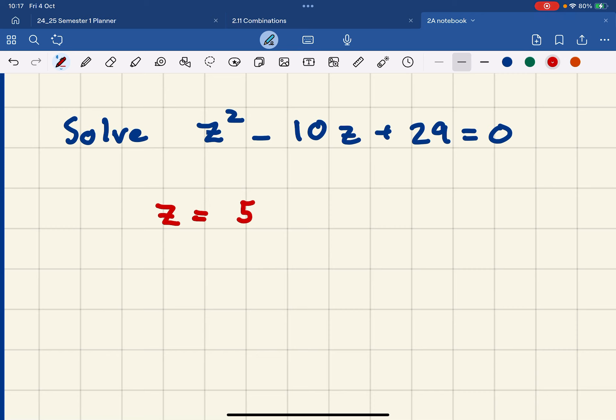And then this second number here, 29, is equal to 5 squared plus another number squared. So that other number must be 2. In fact, it's 5 plus and minus 2i.